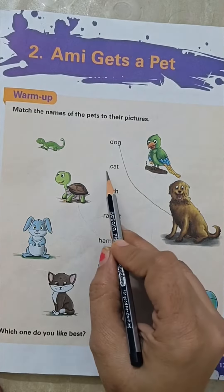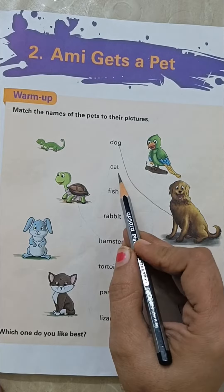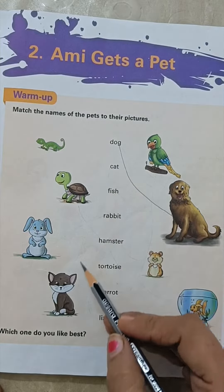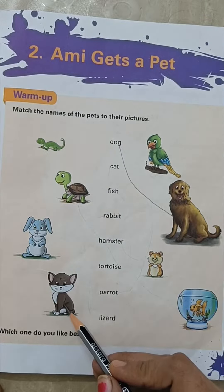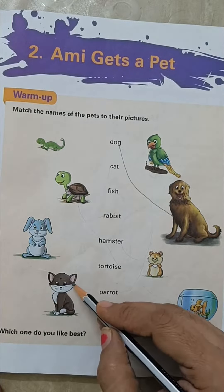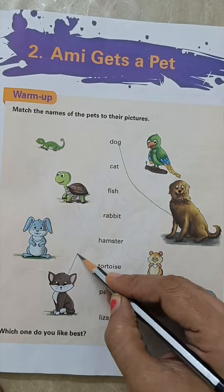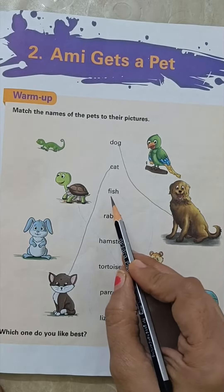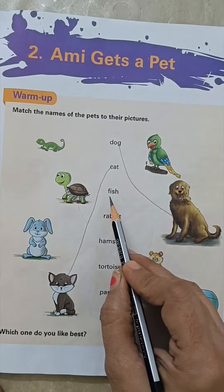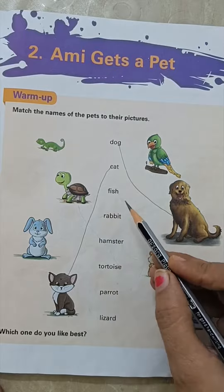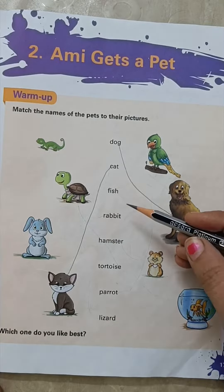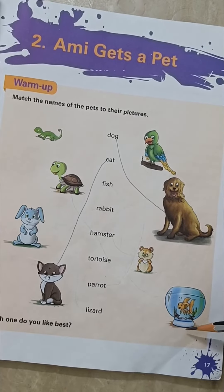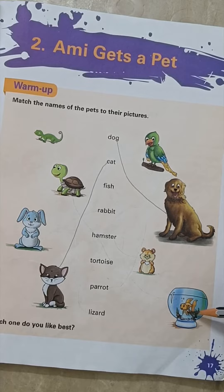Next is cat. Let us find our next pet — cat. So this is a picture of cat. Next, the name of the pet is fish. Where is the picture of fish? Yes, this is a picture of fish.